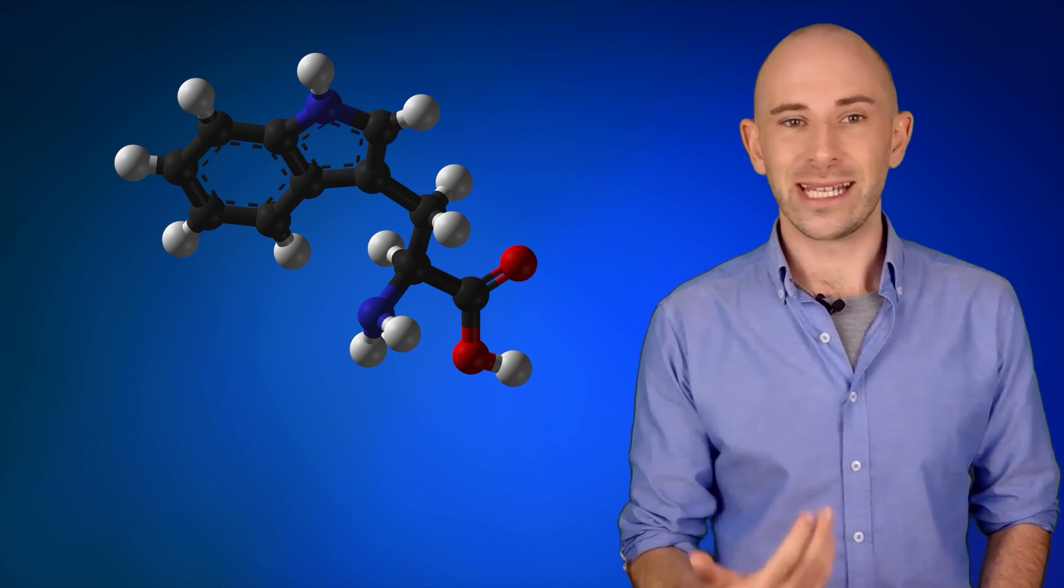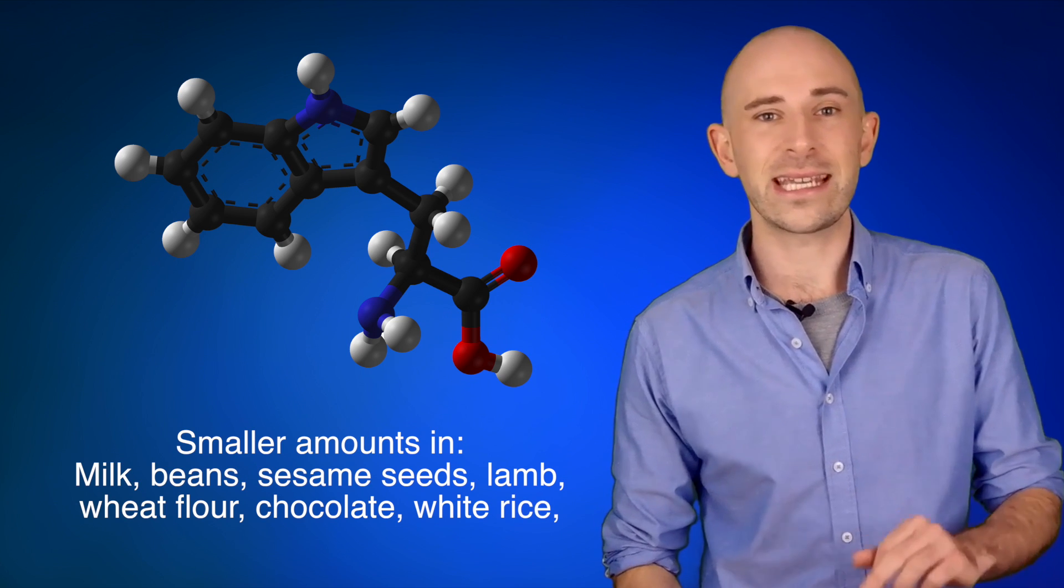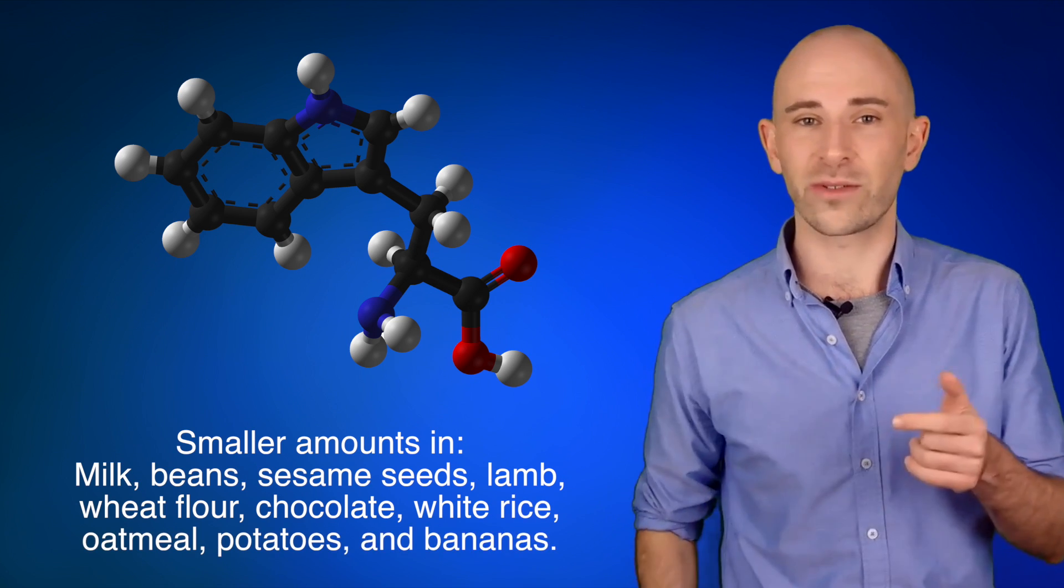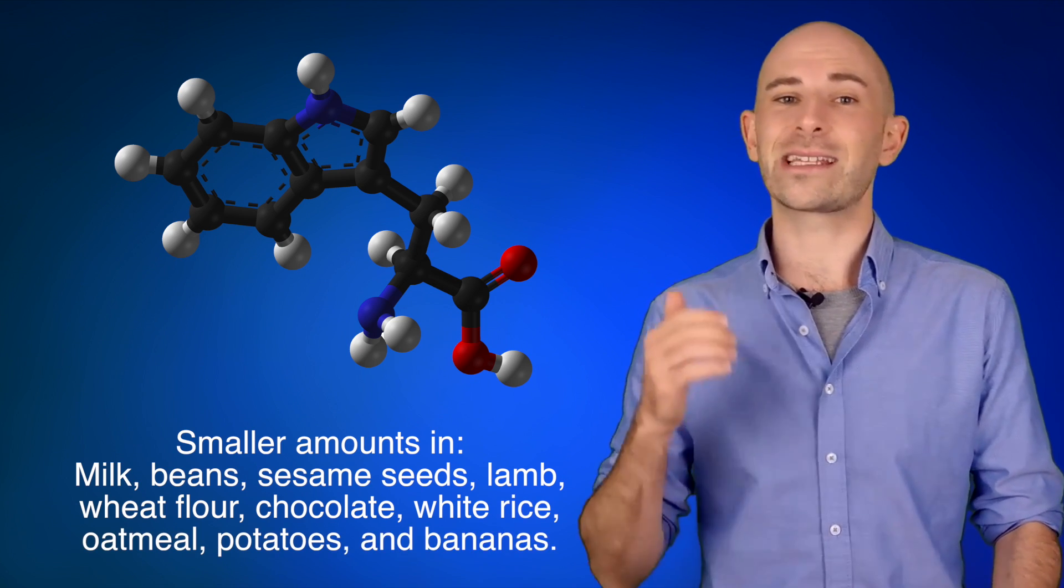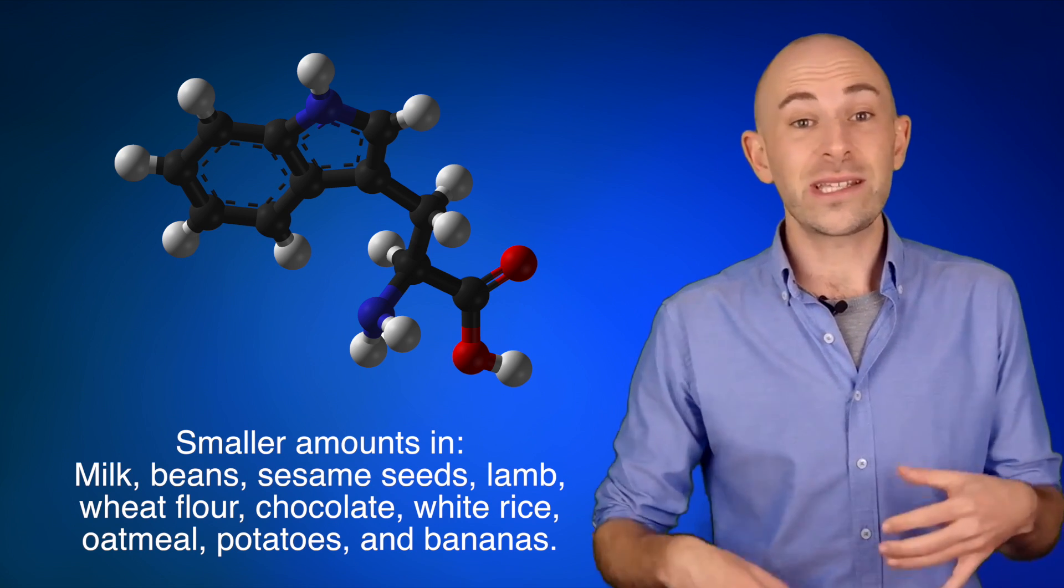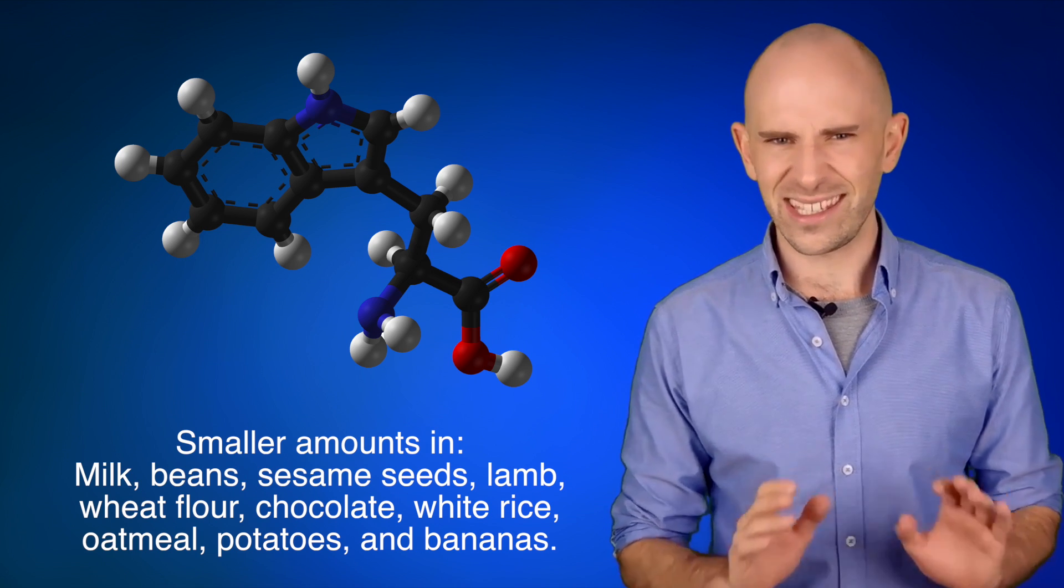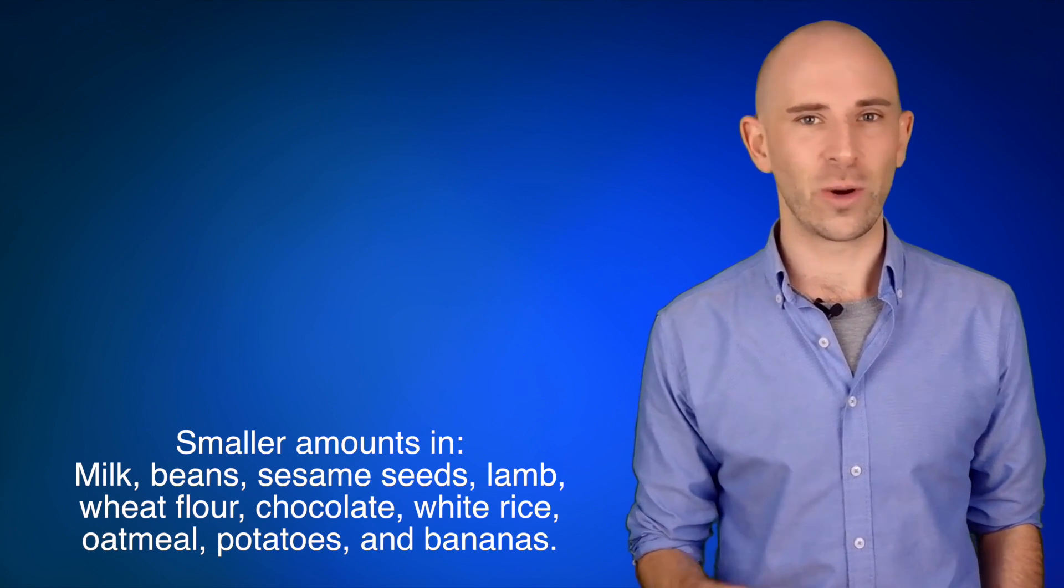It is also found in lesser or similar amounts as in turkey in milk, beans, sesame seeds, lamb, wheat flour, chocolate, white rice, oatmeal, potatoes, and bananas, among lots of other foods. So your body is usually stocked full of tryptophan most of the time, and eating some turkey isn't going to significantly change your body's store.